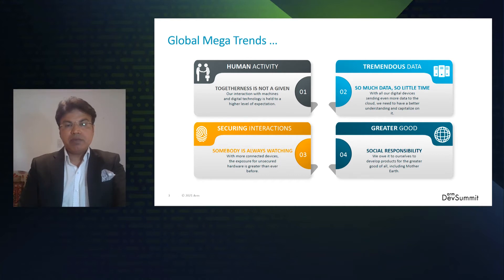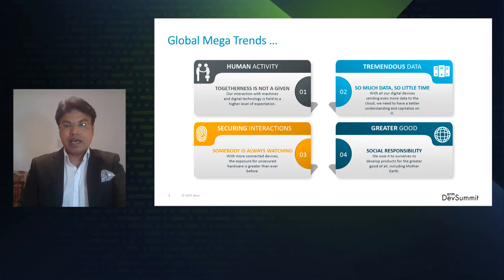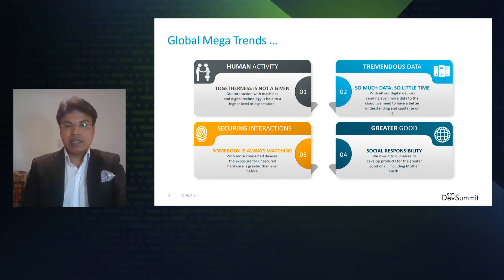There are four mega trends emerging. First, communication between human-to-machine and machine-to-machine is increasing — we must make sure this communication is intuitive and human-like. Second, there's an abundance of data being shared between devices that needs to be analyzed and acted on in a timely manner. Third, with ever-increasing connectivity there's a rising concern about security — we must ensure devices are secure in terms of IP and data. Fourth, we have a social responsibility to make sure the devices we're developing are kinder to the environment.